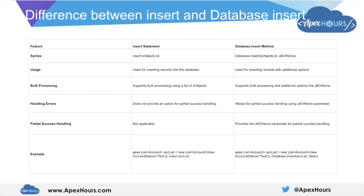Database.insert takes two parameters: one is the list you want to insert, and the other is the all-or-none boolean parameter. If you set all-or-none to true, either all records get inserted or none do. If you set it to false, the successful records still get inserted even if one record fails — those records won't get rolled back.